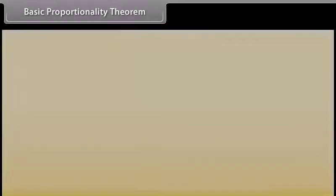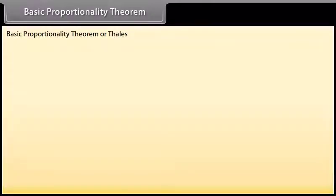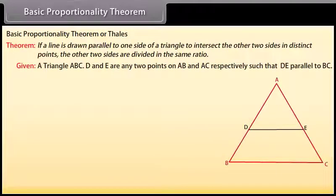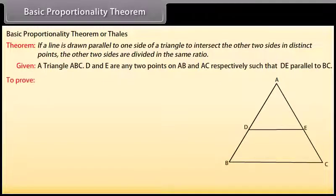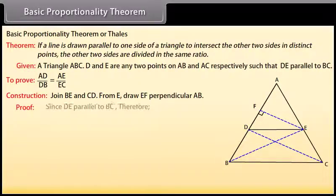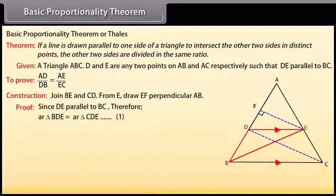Basic Proportionality Theorem (Thales Theorem): If a line is drawn parallel to one side of a triangle to intersect the other two sides in distinct points, the other two sides are divided in the same ratio. Given: triangle ABC; D and E are any two points on AB and AC respectively such that DE is parallel to BC. To prove: AD upon DB equals AE upon EC. Construction: join BE and CD; from E draw EF perpendicular to AB. Mark equation as one.